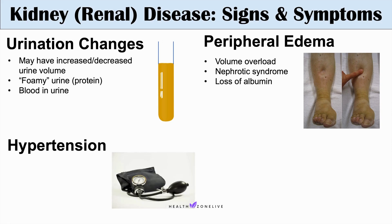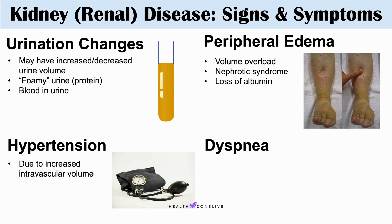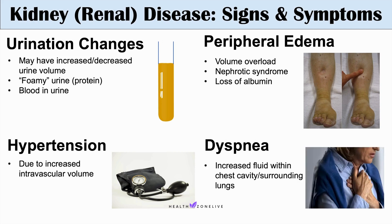Another symptom we can see with kidney disease is dyspnea, or shortness of breath. This is again often due to volume overload — we can see peripheral edema, hypertension, and this can even lead to increased fluid within the chest cavity, surrounding the lungs and causing breathing issues. We can also see some chest pain in these individuals as well.